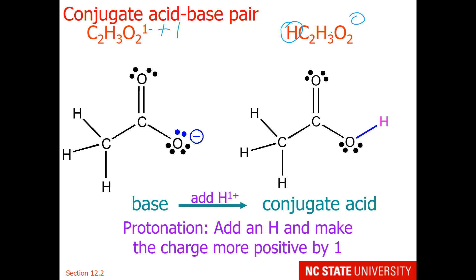Now you may be wondering: why are the hydrogens separated? Why is there 1 hydrogen in front and 3 hydrogens integrated into the formula? The 3 hydrogens are the ones bound to carbon — this is not a particularly polar bond, and these are not acidic hydrogens. There is only one acidic hydrogen, and that is the one bonded to the oxygen.